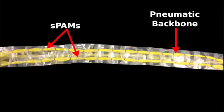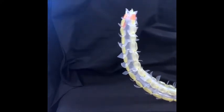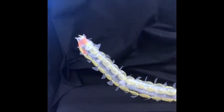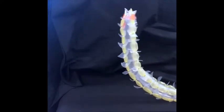We made a continuum robot by attaching three SPAMs to a larger thin-walled tube of polyethylene that serves as the robot's pneumatic backbone. The SPAMs bend the pneumatic backbone by exerting a tension force, analogous to a tendon-driven continuum robot.